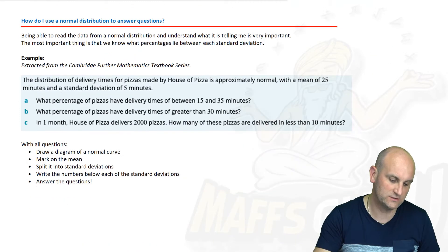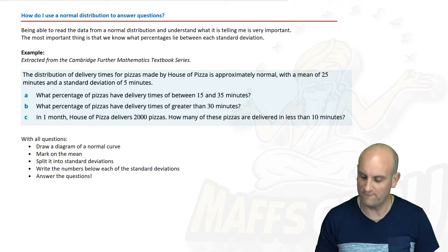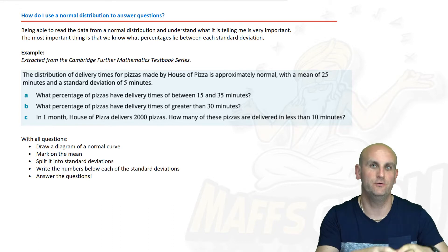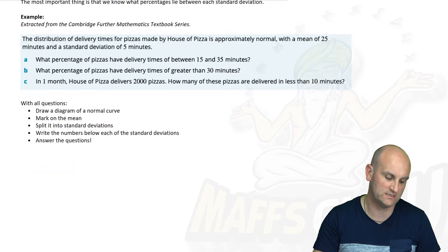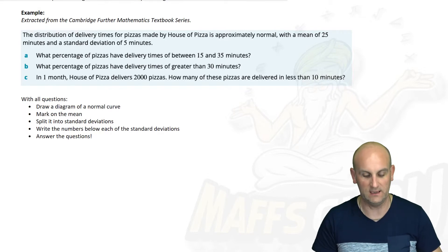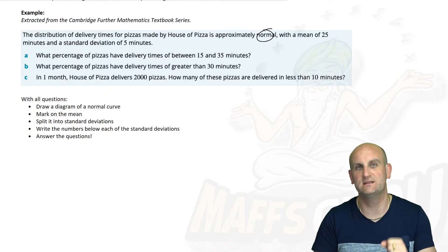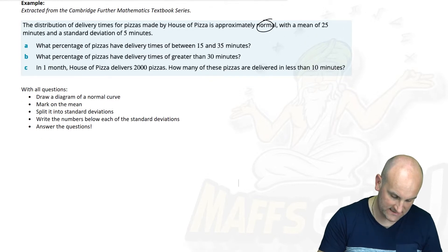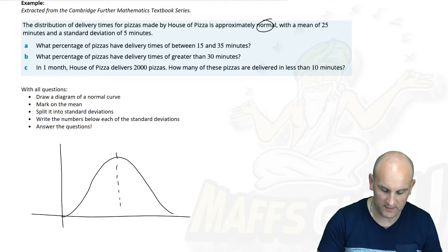Cambridge have fabulously and very kindly allowed me to use their Further Maths textbook series and the examples. The distribution of delivery times for pizzas made by the House of Pizza is approximately normal. There is a keyword there that tells you it's normal, so I can draw a diagram. There is my normal distribution, there is my dotted line.